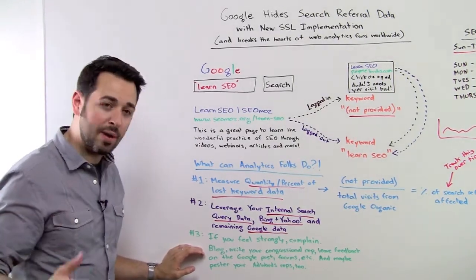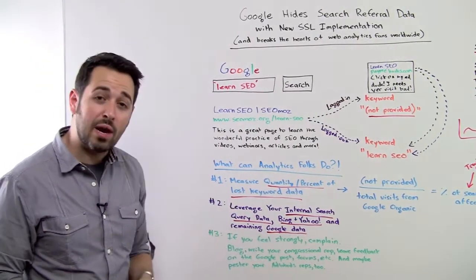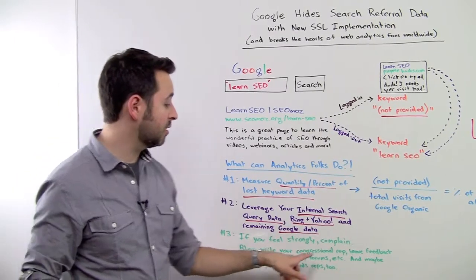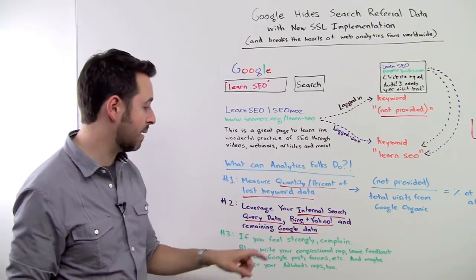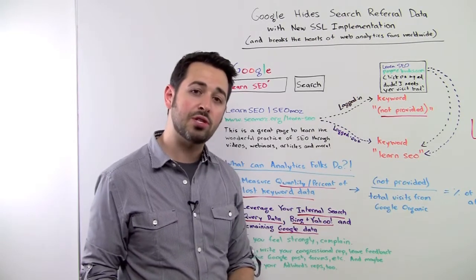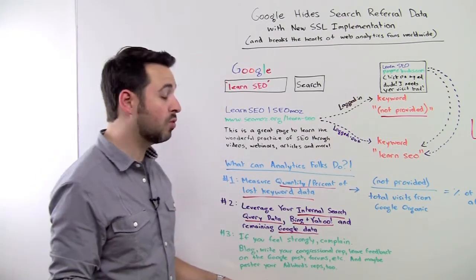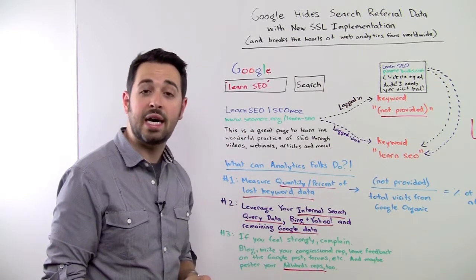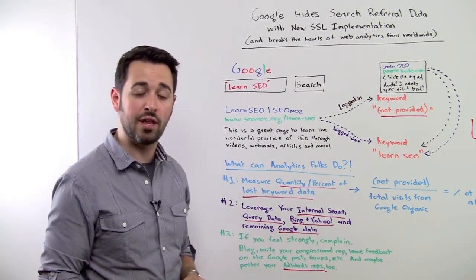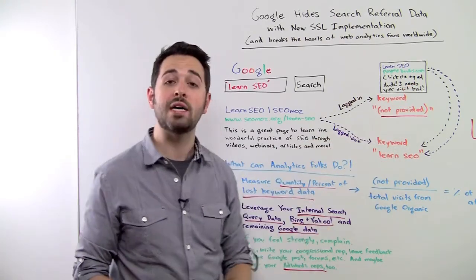You can obviously blog about it, write about it. You could even write to your congressional rep. The Google blog post announcing this accepts comments. The Google Webmaster Tools forums certainly accept comments. You can also contact your AdWords representatives and let them know that you're not totally thrilled by this move either. Remember, AdWords data is still passing the referrer. It's organic search that's affected.